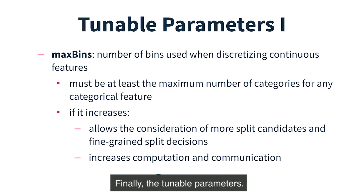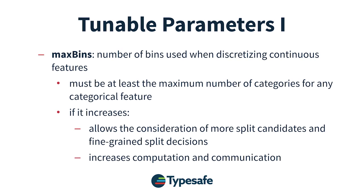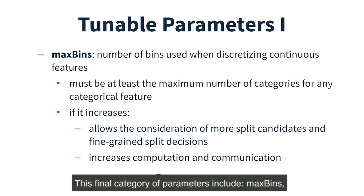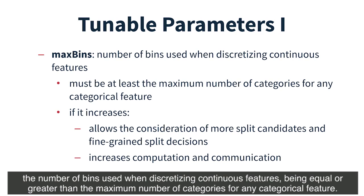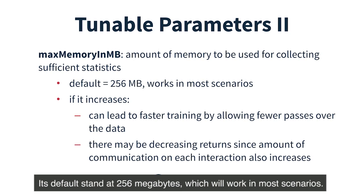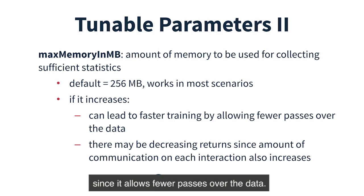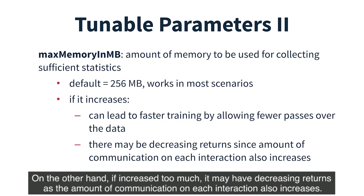Finally, the tunable parameters. As their name suggests, these are parameters for fine-tuning a model, and they also need to be validated on held-out test data as they too may lead to overfitting. This category includes max bins — the number of bins used when discretising continuous features, which must be equal to or greater than the maximum number of categories for any categorical feature. Max memory in MB is the amount of memory used for collecting sufficient statistics; its default is 256 megabytes, which works in most scenarios. If increased, this parameter can lead to faster training since it allows fewer passes over the data. However, if increased too much, it may have decreasing returns as the amount of communication on each iteration also increases.